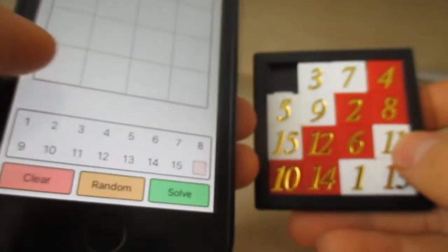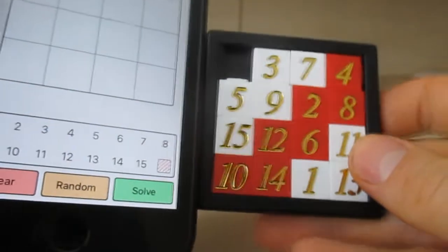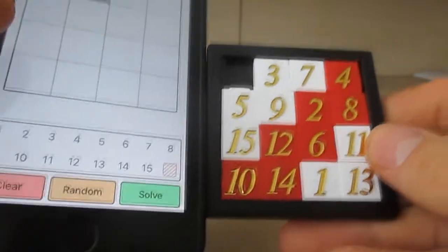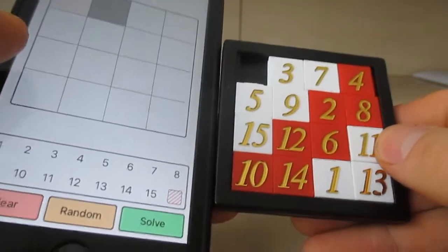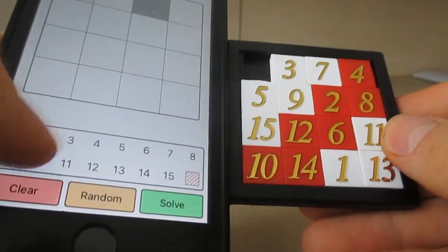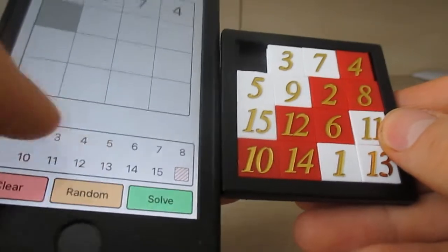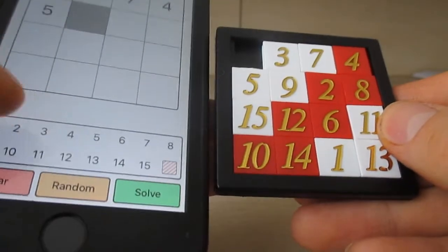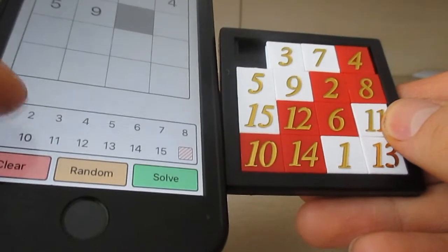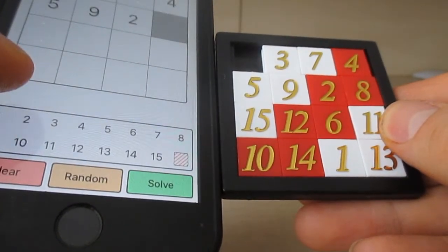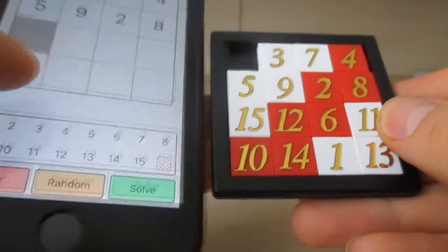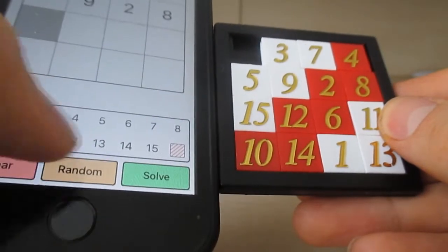Yeah, and then continue with the numbers. So let's go ahead and put in all the numbers. Going to put in the numbers here, so in my case it's 3, 7, 4, 5, 9, 2, 8.